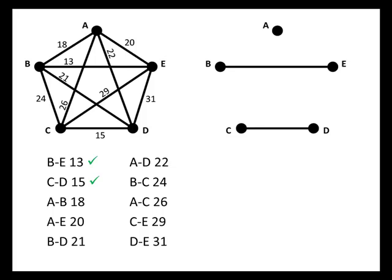Now that we're about to consider a third edge, we have to worry about encountering those problems. We're going to show this with an orange edge — we imagine adding that edge to our graph but haven't added it yet, indicated by a question mark in our list. We're going to add that edge unless it creates three edges at one vertex or a circuit that doesn't contain all of the vertices. The new edge from A to B doesn't cause either of those problems, so we go ahead and add it.